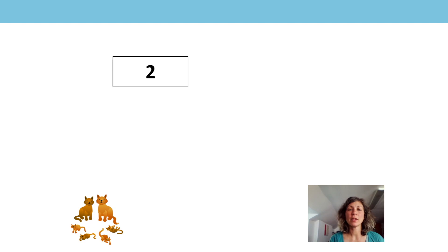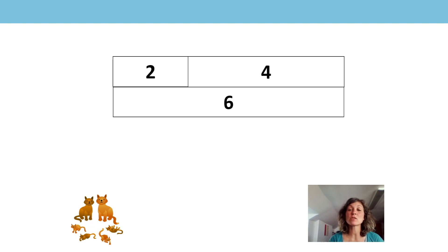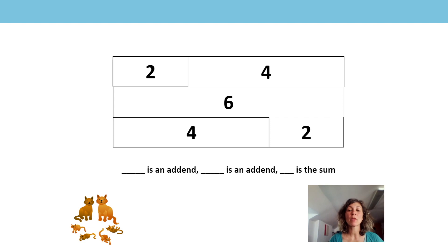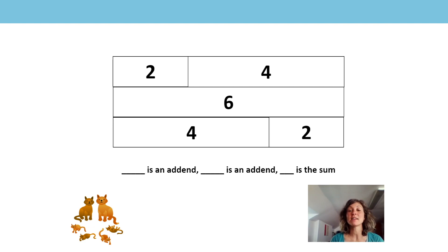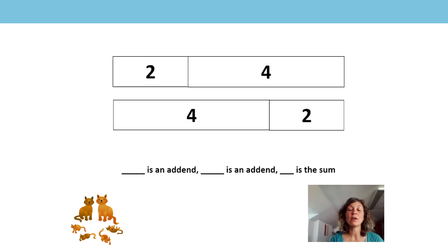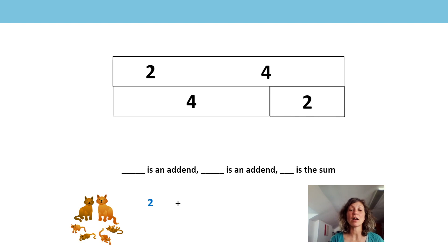We can also represent the picture using a bar model. What does the two represent? The two adult cats. And the four? The four kittens. So there were six cats all together, and we could also say there were four kittens and two adult cats. Can you help me complete this stem sentence? Mm is an addend. Mm is an addend. Mm is the sum. Pause the video and have a go. Two is an addend. Four is an addend. Six is the sum. You might have said four is an addend, two is an addend, six is the sum — because two plus four is equal to four plus two.